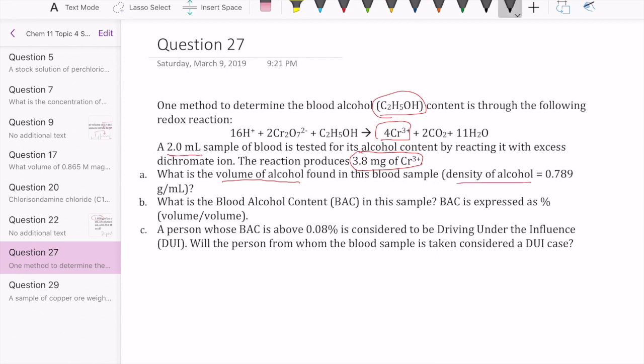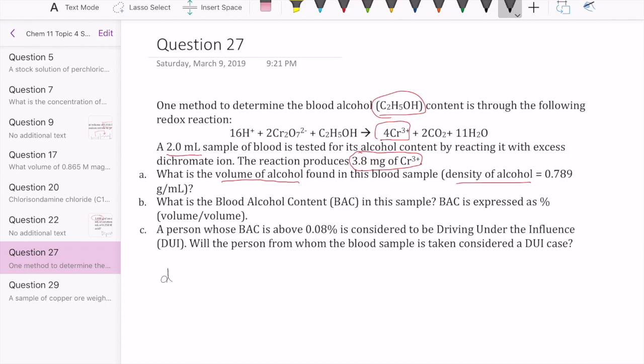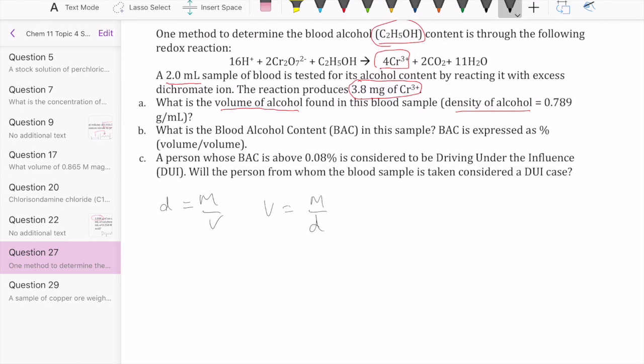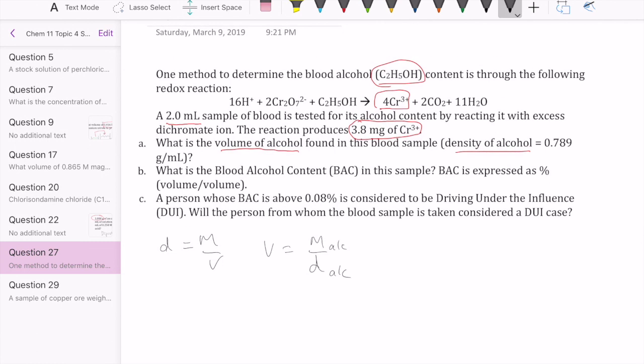Anytime you're given density and you're trying to find volume, you immediately remember that density relationship m over v. So volume is just m over density. That's how we're going to find the volume. But what we need is the mass of the alcohol. Alcohol is our reactant, but we also know the product in this case, given in mass. So we can do stoichiometry to figure out the mass of the alcohol.